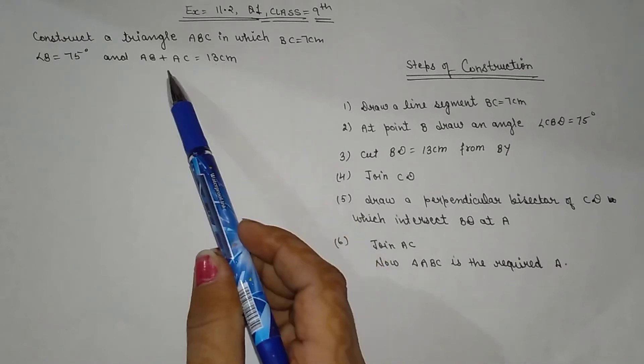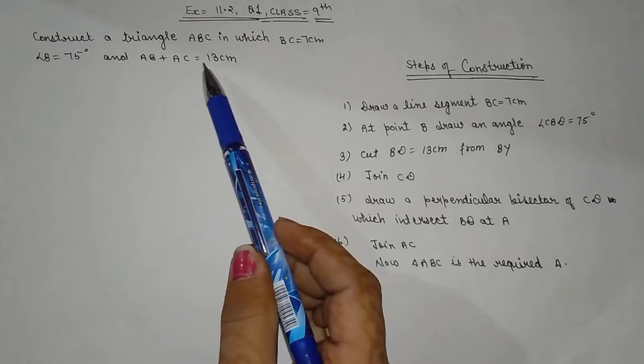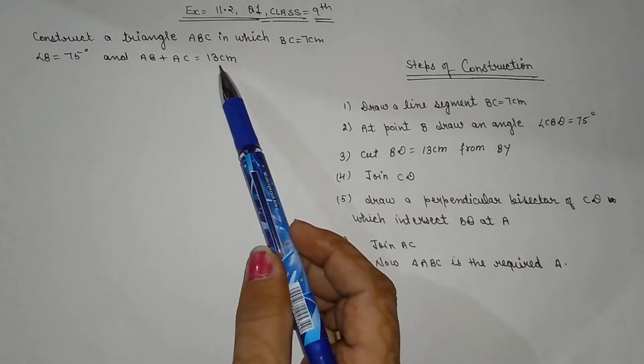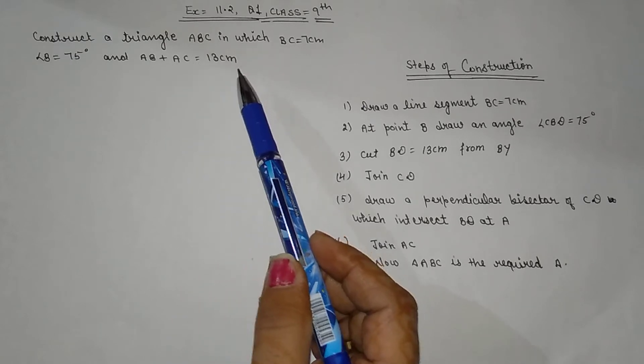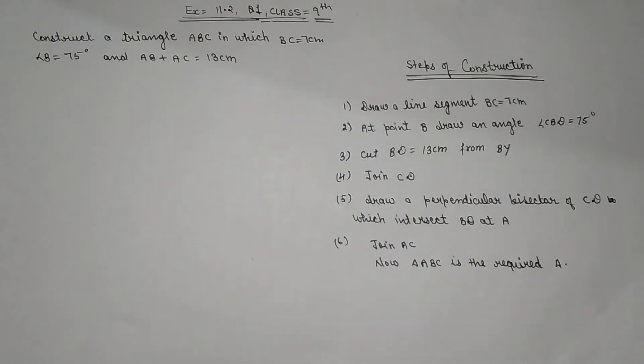The given condition is that AB plus AC is 13 cm. So how do we make this triangle? Let's look at how we construct this triangle.